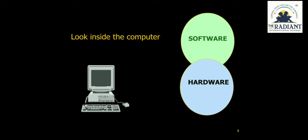The computer system works with the help of hardware and software. The physical parts of a computer that we can touch and see are called hardware. Software is a set of instructions that helps the computer to work in a desired manner.